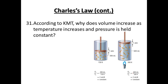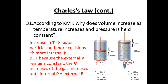According to KMT, why does volume increase as temperature increases when pressure remains constant? If we increase temperature, particles move faster. In order to keep the same pressure — the same number of collisions with the container walls — the volume needs to increase. So the piston needs to move up to keep collisions constant. Increase in temperature → faster particles → more internal pressure → volume increases so that external pressure remains the same. Just the opposite: if temperature decreases, volume also decreases.